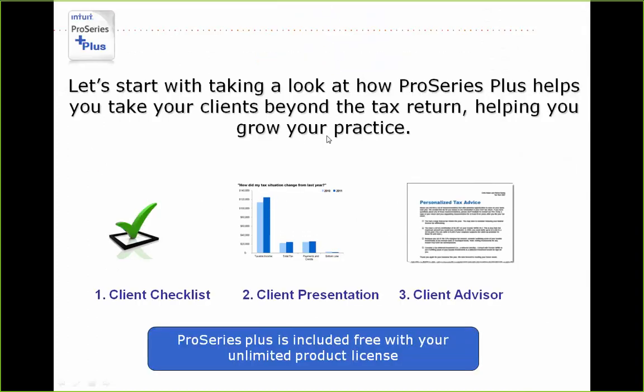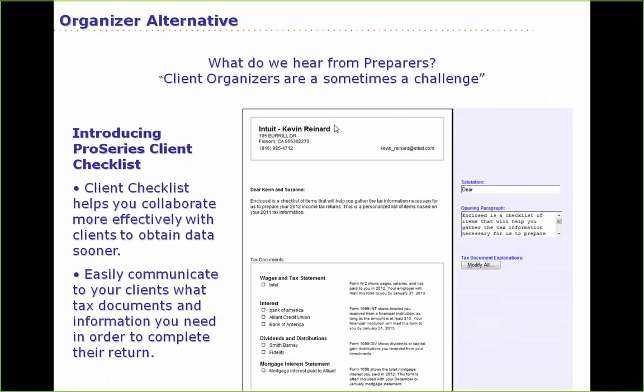Okay, last couple of slides. ProSeries Plus is included and has three different reports: a client checklist, a client presentation, and a client advisor. The checklist is an alternative to your standard tax organizer — if you don't want to send all the paper to your client, or your customers don't fill it out the way you want, you can send them a checklist instead.